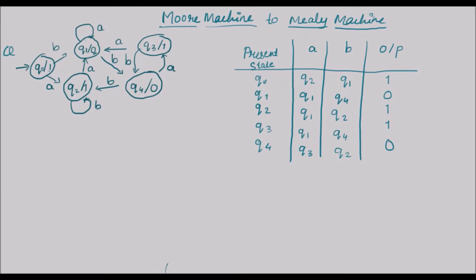Now let's make a table for the Mealy machine, where the output changes according to the inputs. The present state goes to the next state with a certain input, and according to that input it has different outputs. Let's make that clear by making a state transition table of the Mealy machine — this is the Moore machine table and this is the Mealy machine table.